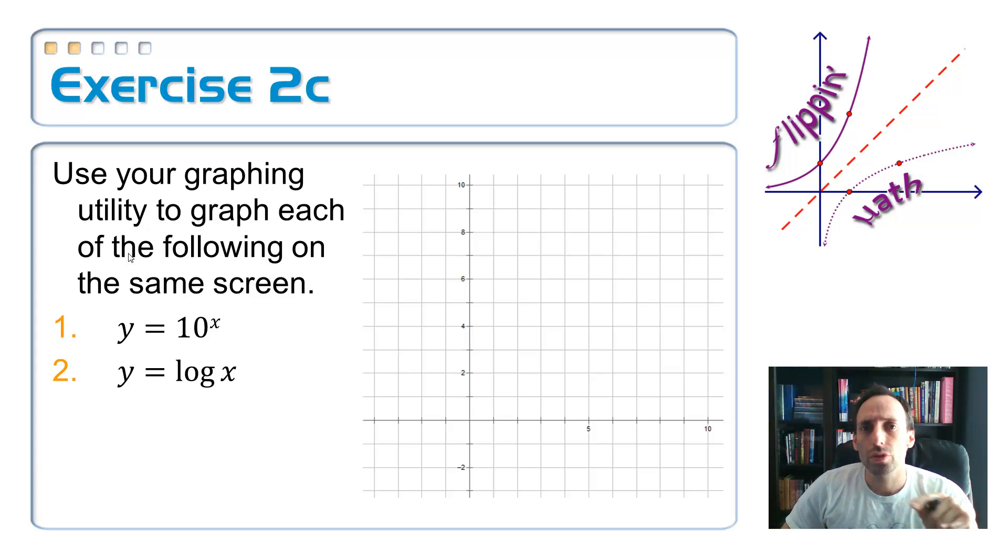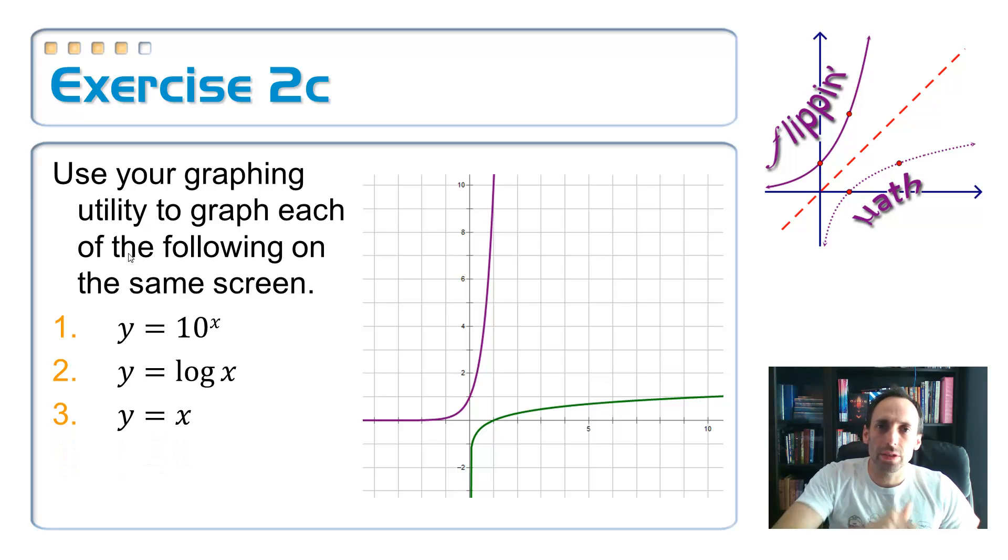Now, instead of hitting graph, I want you to go to zoom and find zoom square. That way it makes your viewing rectangle proportional. And that's what we want to see. So this first graph, the purple graph, that's y equals 10 to the x. That's an exponential growth equation, right? So now let's graph number two, which is log of x. That's the green graph there. Is there some sort of relationship between those two things? Those look like they're reflections. Why don't you go back to y equals and type in this equation, y equals x. Go back to graph, hit that graph button, and you should get something like this. And look at that. Those things are perfect reflections across line y equals x.